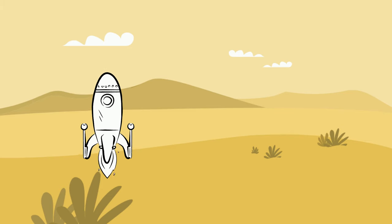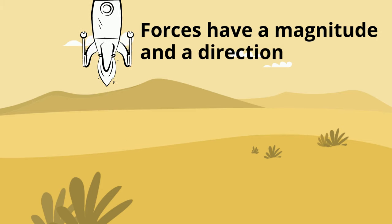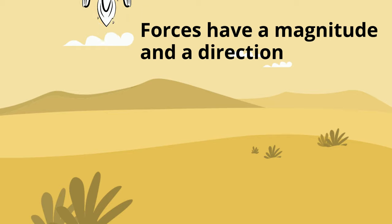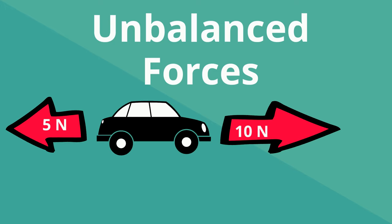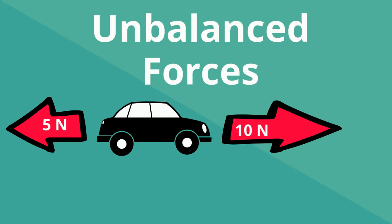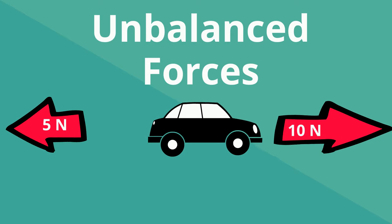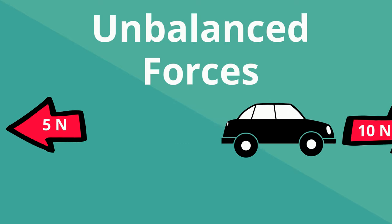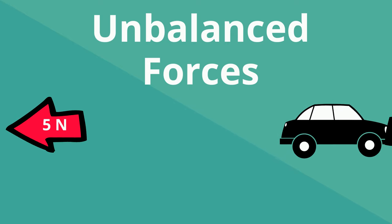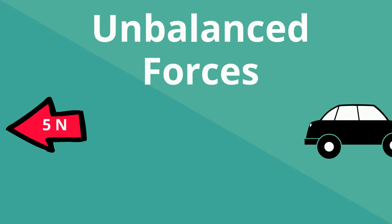Remember, forces have a magnitude and a direction. Unbalanced forces are not equal, and they cause the motion of an object to change. When two unbalanced forces are exerted in opposite directions, their combined force is equal to the difference between the two forces. The magnitude and direction of the net force affects the resulting motion. This combined force is exerted in the direction of the larger force.